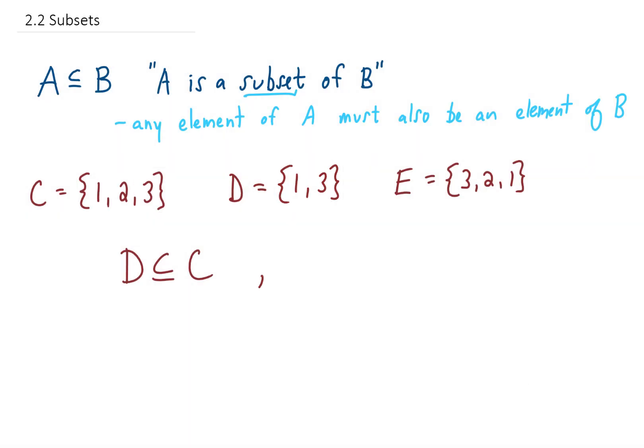You could ask the reverse question, is C a subset of D? And the answer is no, because not every element in C is also in D. More specifically, C has this element two that does not appear in set D. So the notation we use here is we just put a line or a slash through that subset symbol, so that says that C is not a subset of D.